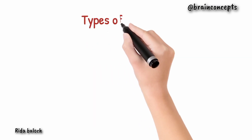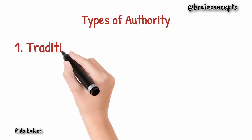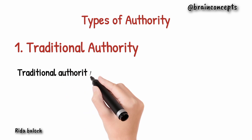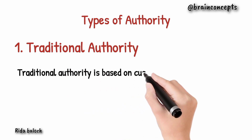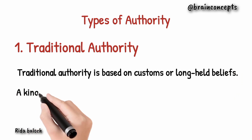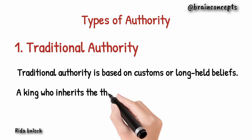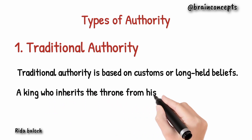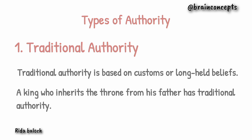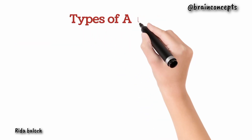Just like power, there are also some types of authority. These types show us where the right to control comes from. The first type is traditional authority. Traditional authority is based on customs or long-held beliefs. For example, a king who inherits the throne from his father has traditional authority — meaning it is passed down traditionally from father to son.